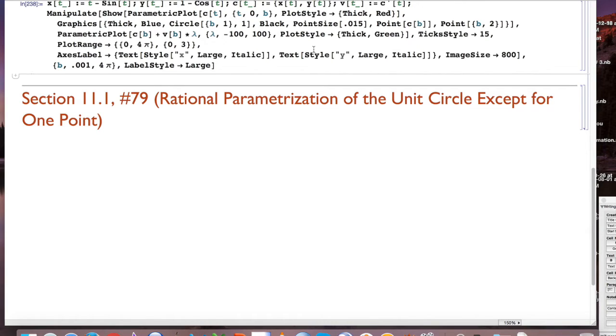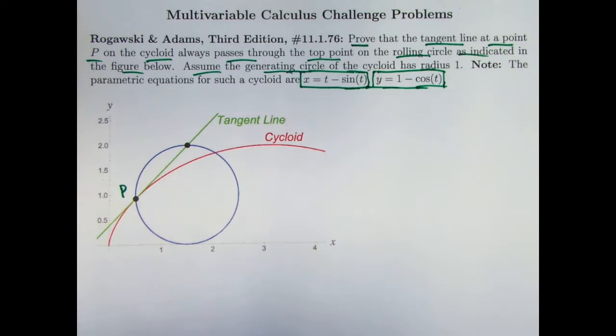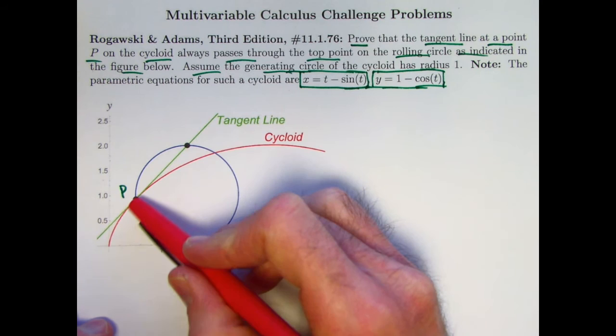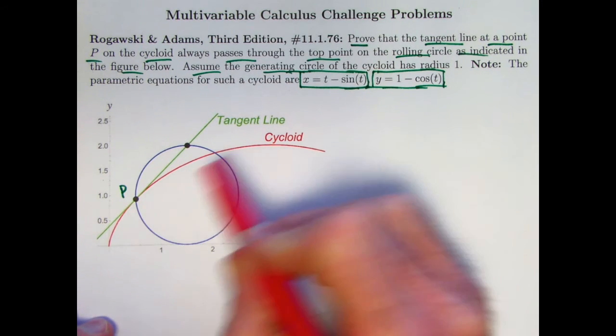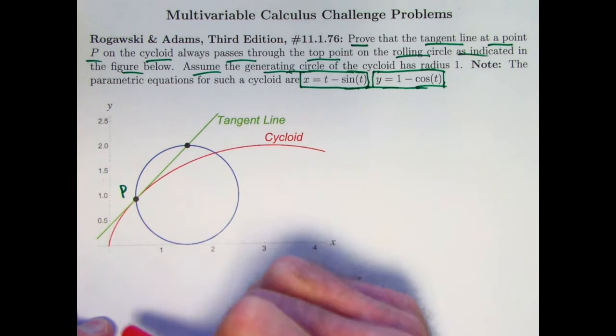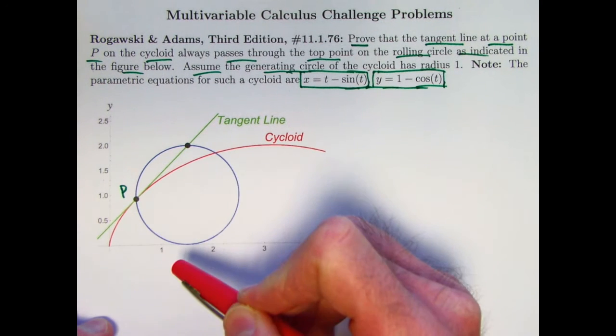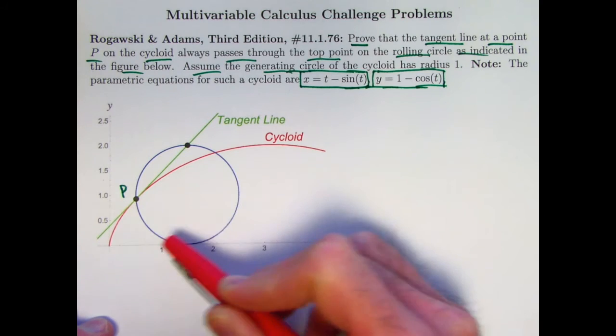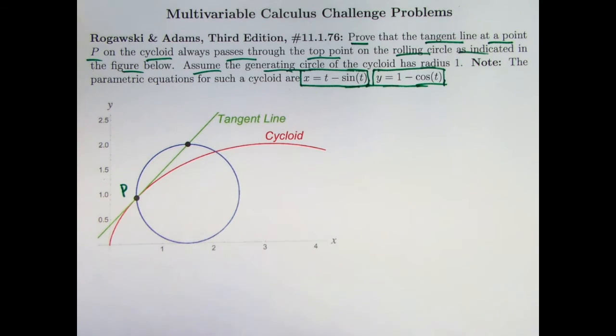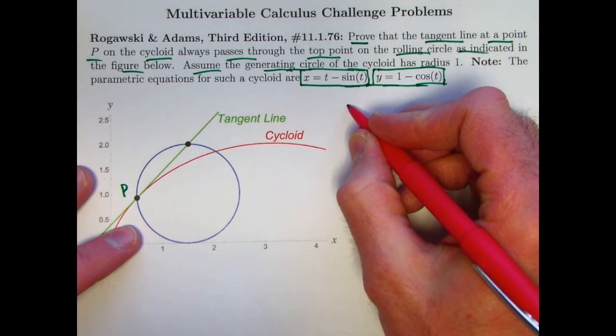Alright, now we're going to go back to solving the problem. So now we're back to the problem at hand. The goal again is to show that for an arbitrary point on this red curve on the cycloid, that the tangent line to that curve passes through the top of the circle that generates the cycloid, the wheel, as the wheel moves. And so what kind of strategy should we use? Well, anytime you have a line, you're going to want the equation of the line.